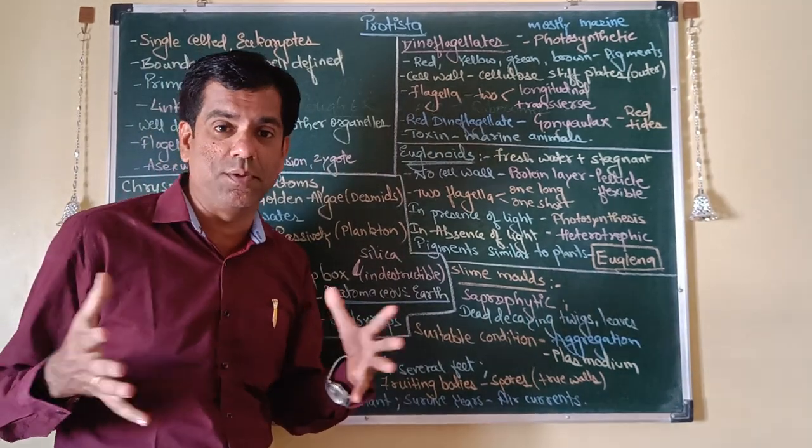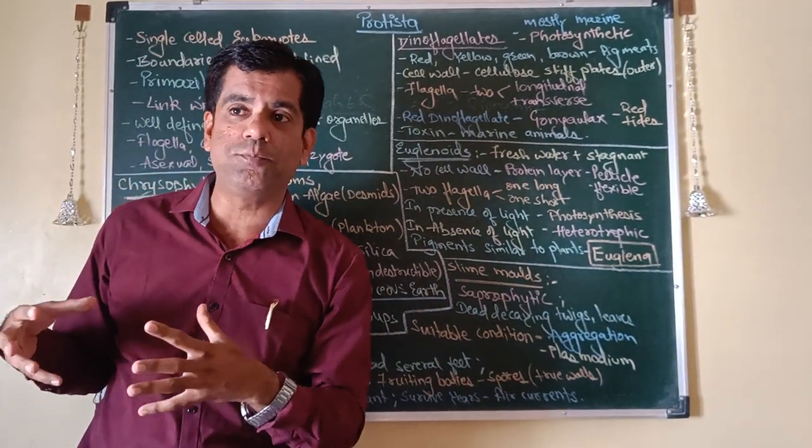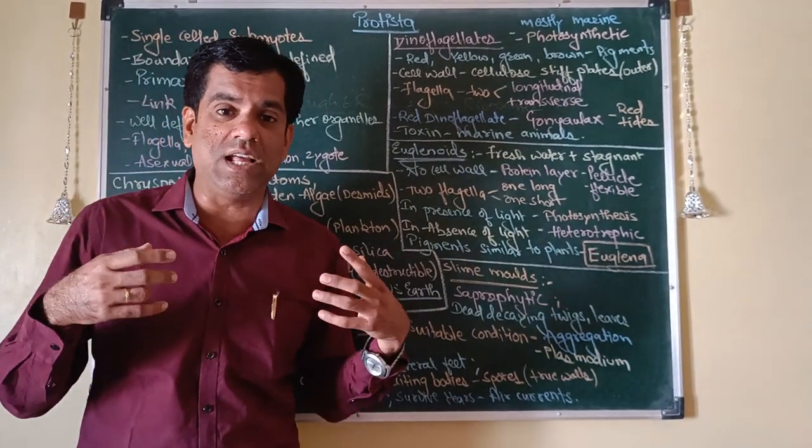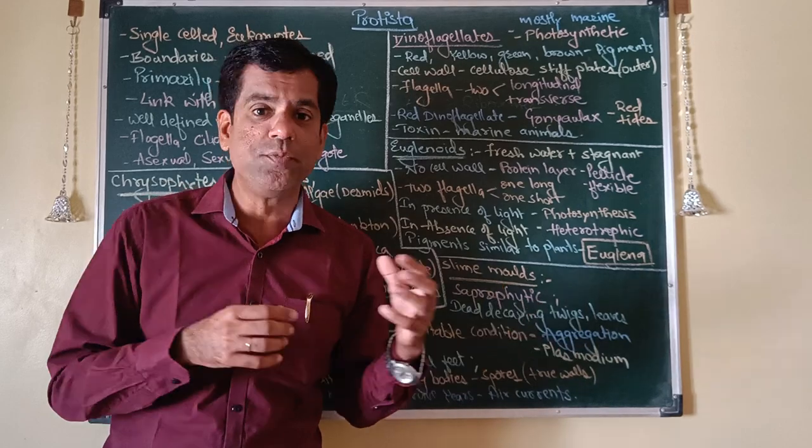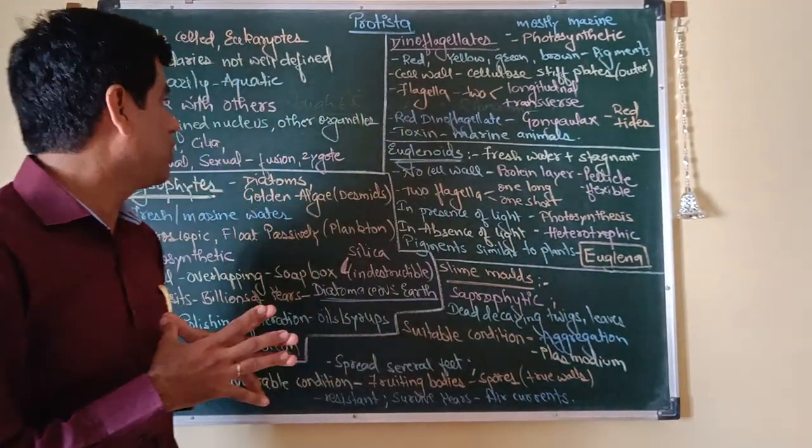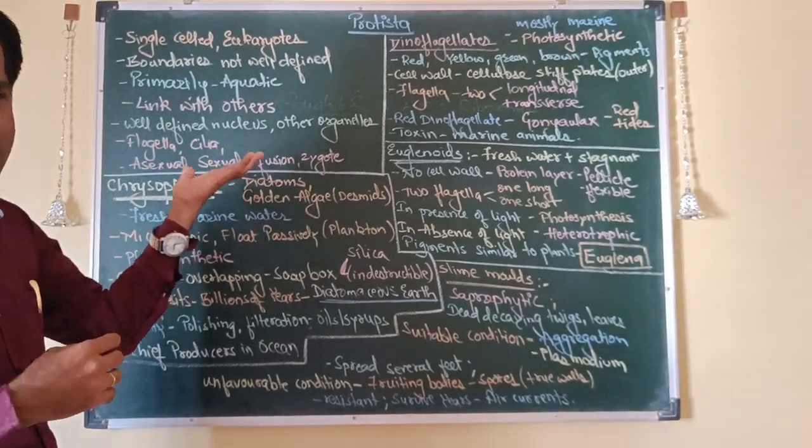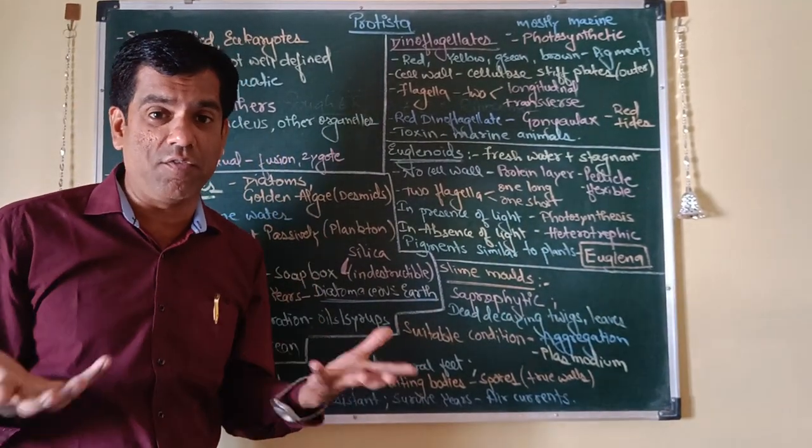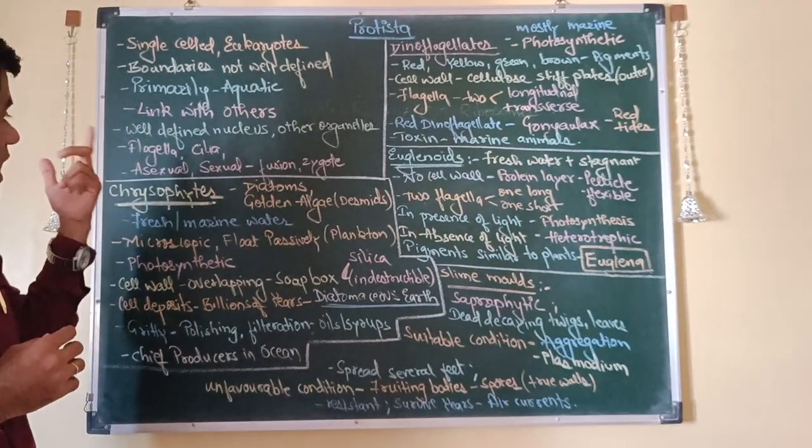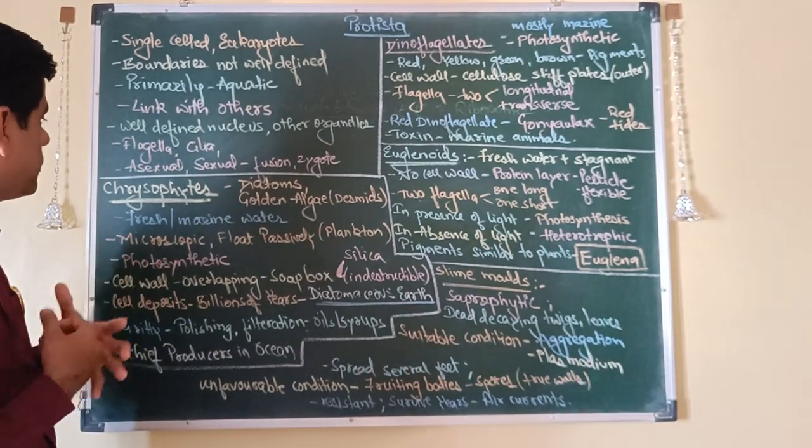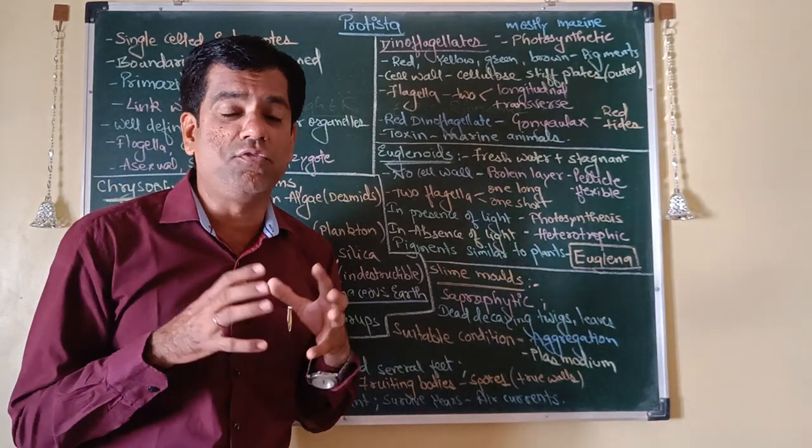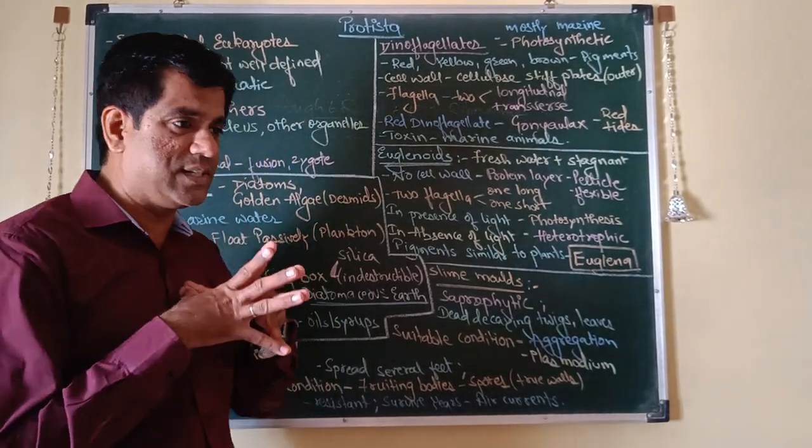They are forming a link with the other kingdoms. Your monerans are unicellular prokaryotes, Protists are unicellular eukaryotes, and the other higher ones are your plants, animals, and fungi. These Protists are forming a link between these monerans and your higher kingdoms. They have very defined nucleus, membrane-bound organelles, and they have flagella and cilia for locomotion. They show both asexual and sexual reproduction, where they show the formation and the fusion of gametes.